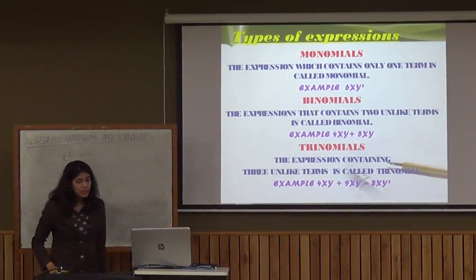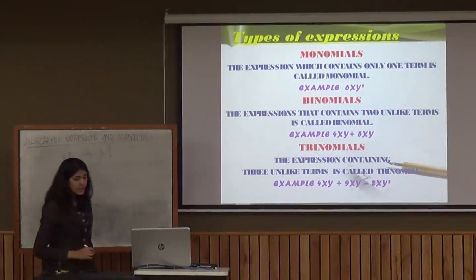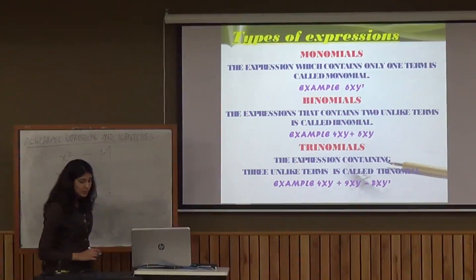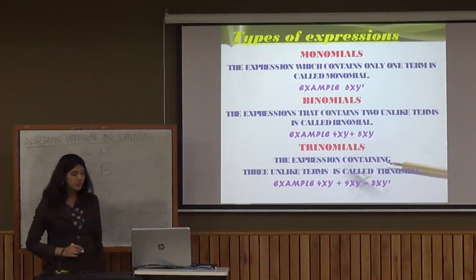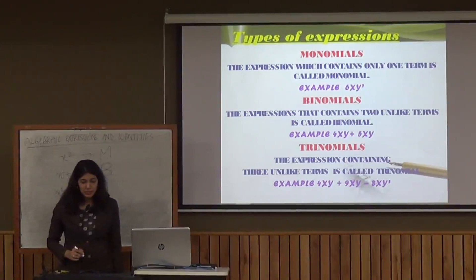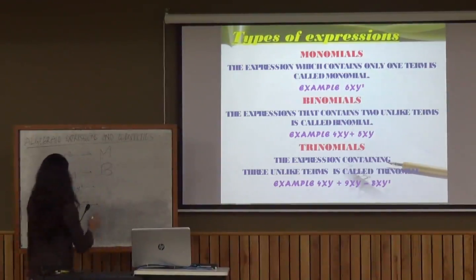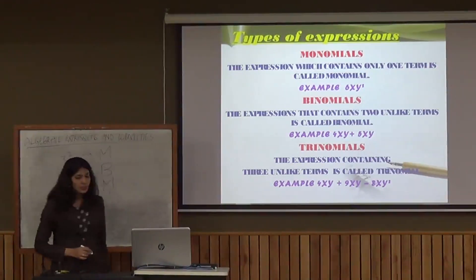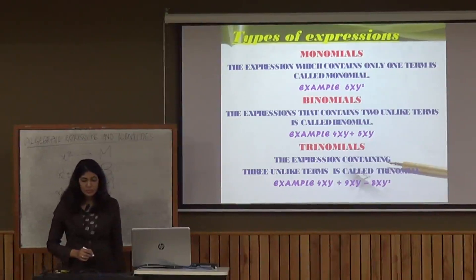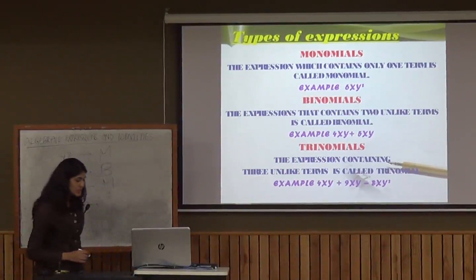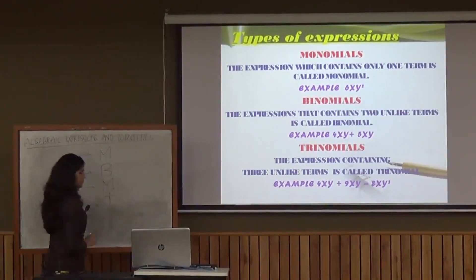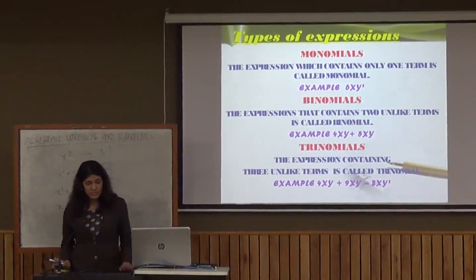For x square, it can be classified as a monomial since it is a single term. x square plus y contains two unlike terms, so it is a binomial. x square plus 2x square contains two like terms; adding them gives 3x square, so it is a monomial, not a binomial. x plus y plus z contains three unlike terms, so it is a trinomial. This is how we classify different types of expressions.